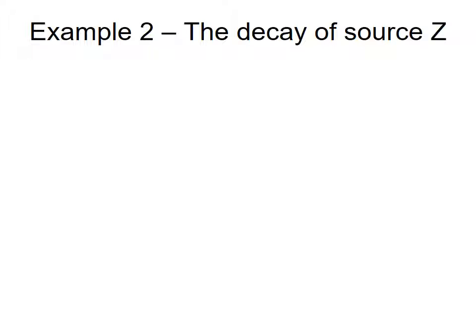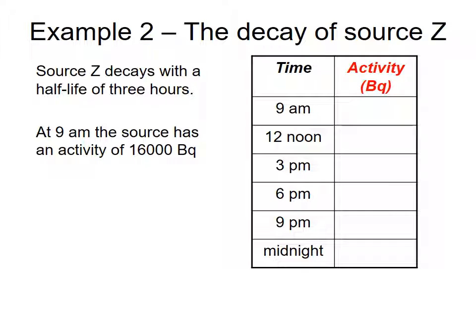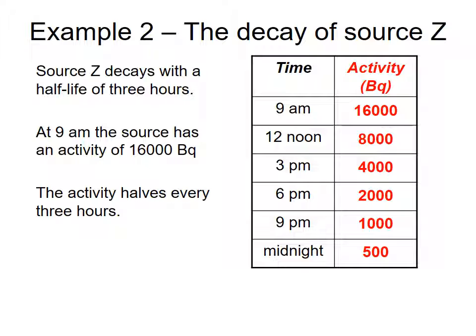So look at the decay now of source Z. Source Z decays with a half-life of three hours. At 9 a.m., the source has an activity of 16,000 Becquerels. By 12 noon, that's gone down to 8,000. By 3 p.m., 4,000. 6 p.m., 2,000. 9 p.m., 1,000. And by midnight, it's going to be 500. That means the activity halves every three hours.